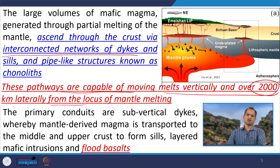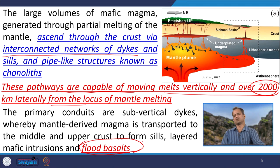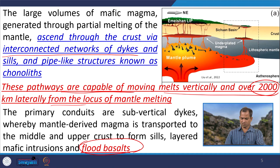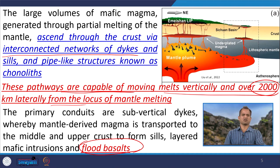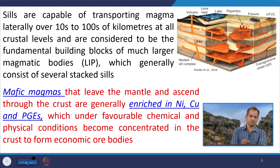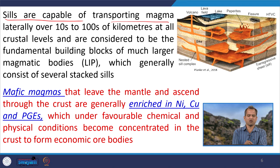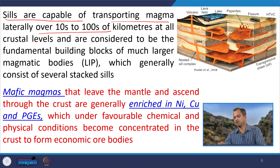This magma or basaltic magma, particularly when it is emplaced near to the surface, is called flood basalt — like the Deccan, which is one of the Indian examples, also called the Deccan traps. The sills are capable of transporting magma laterally about hundreds of kilometers at different crustal levels. If you see this diagram, these are the sills which are parallel to the surface at different levels, giving rise to the large igneous province.